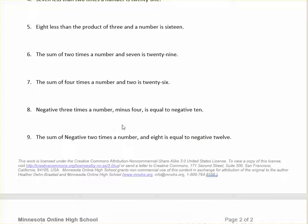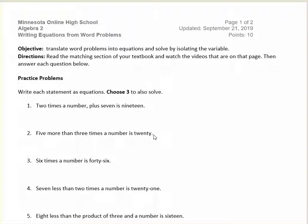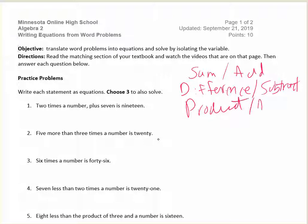Some things to review, and this is in your book, but sum means to add. Difference means to subtract. There's some other phrases that mean these things as well, but these are kind of the big ones. Product means to multiply. And quotient is divide.